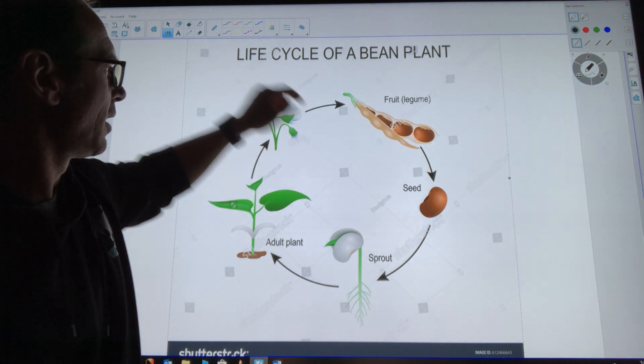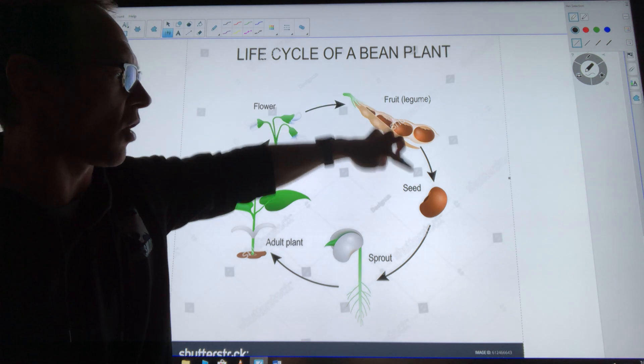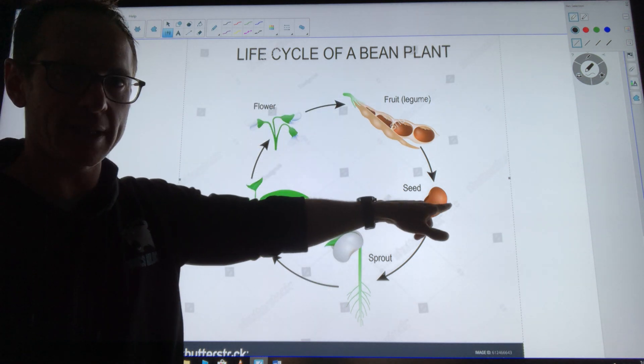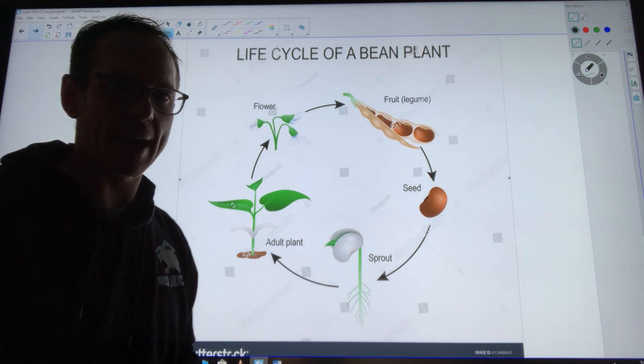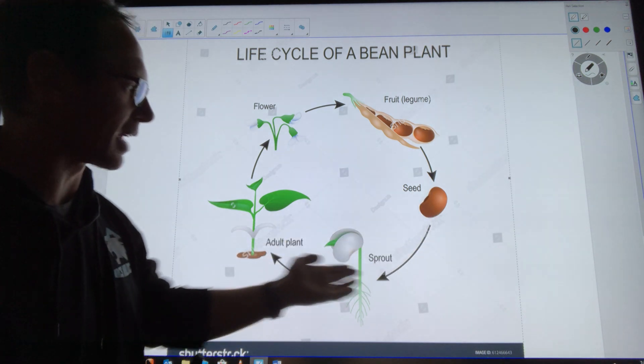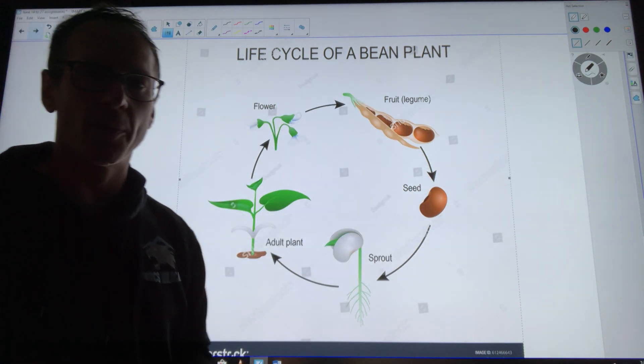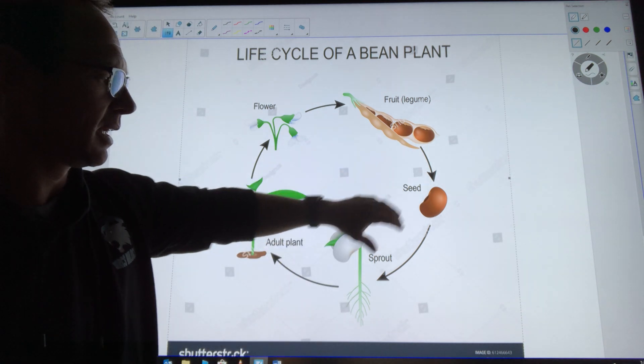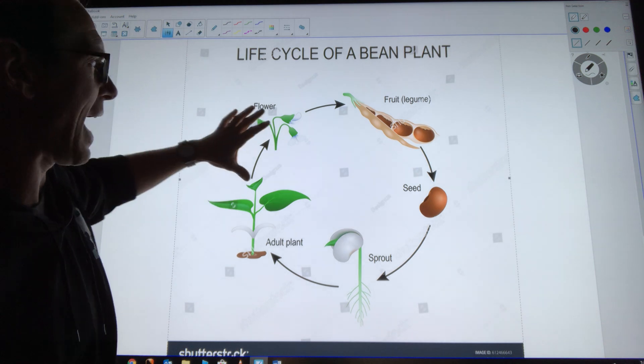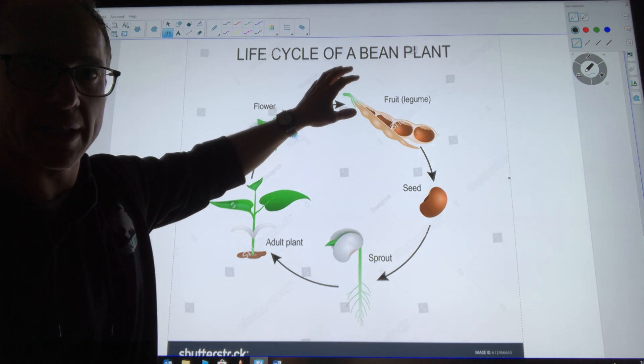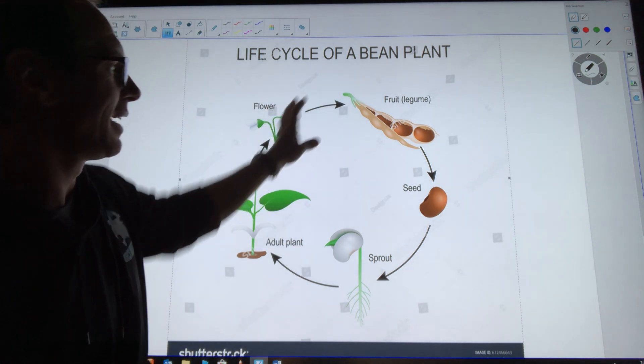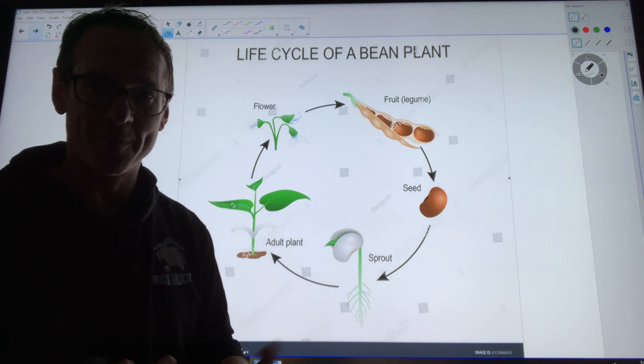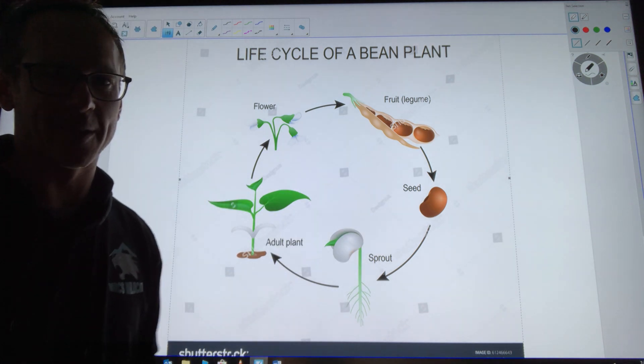Then once those seeds fall off the flower, we have more seeds that go into the ground and our cycle starts all over again. So our life cycle of most seed plants begins with a seed, then to a sprout, then to an adult where more seeds are created and dropped to the ground to create more new plants. So that's our life cycle. Thanks guys!